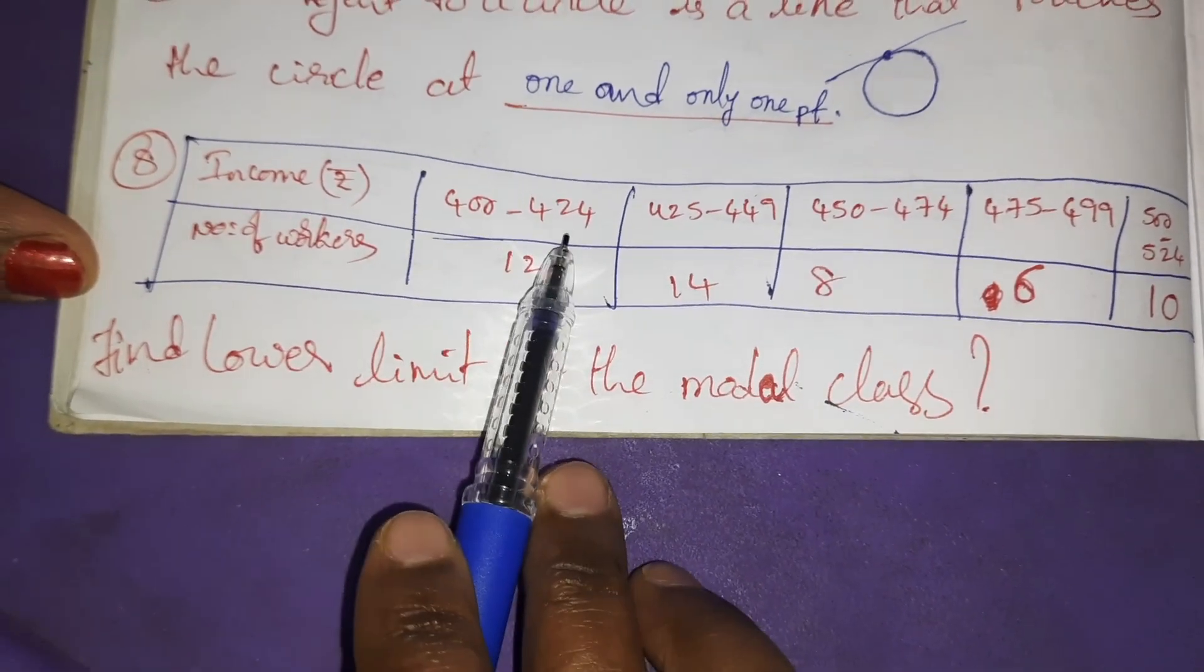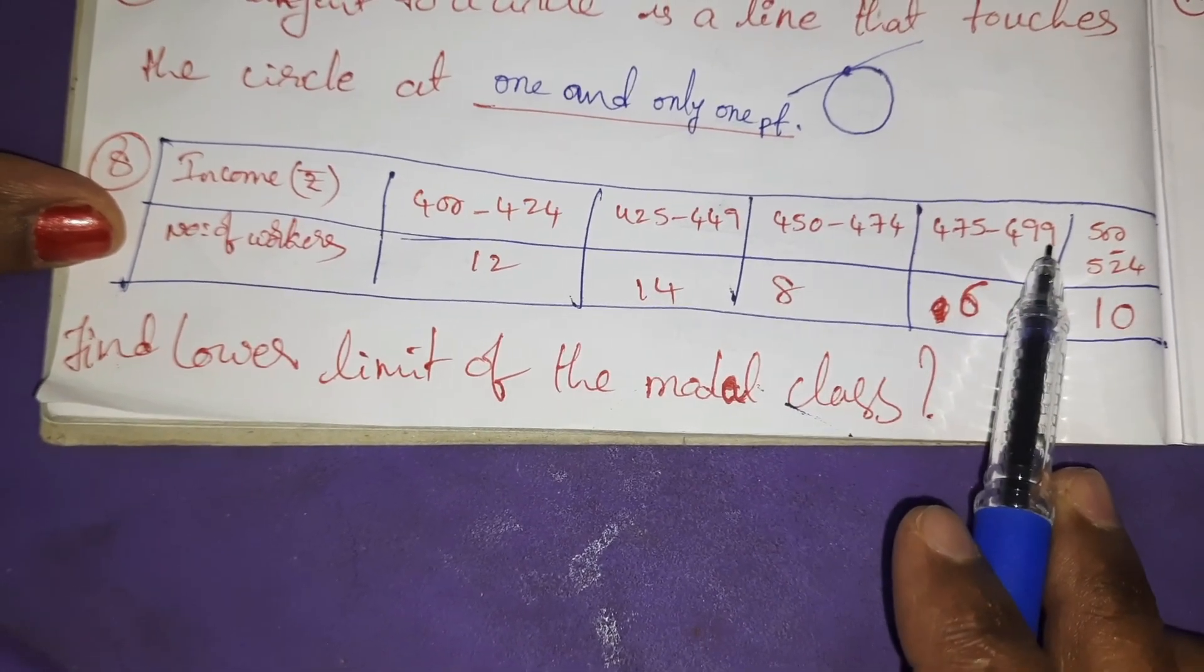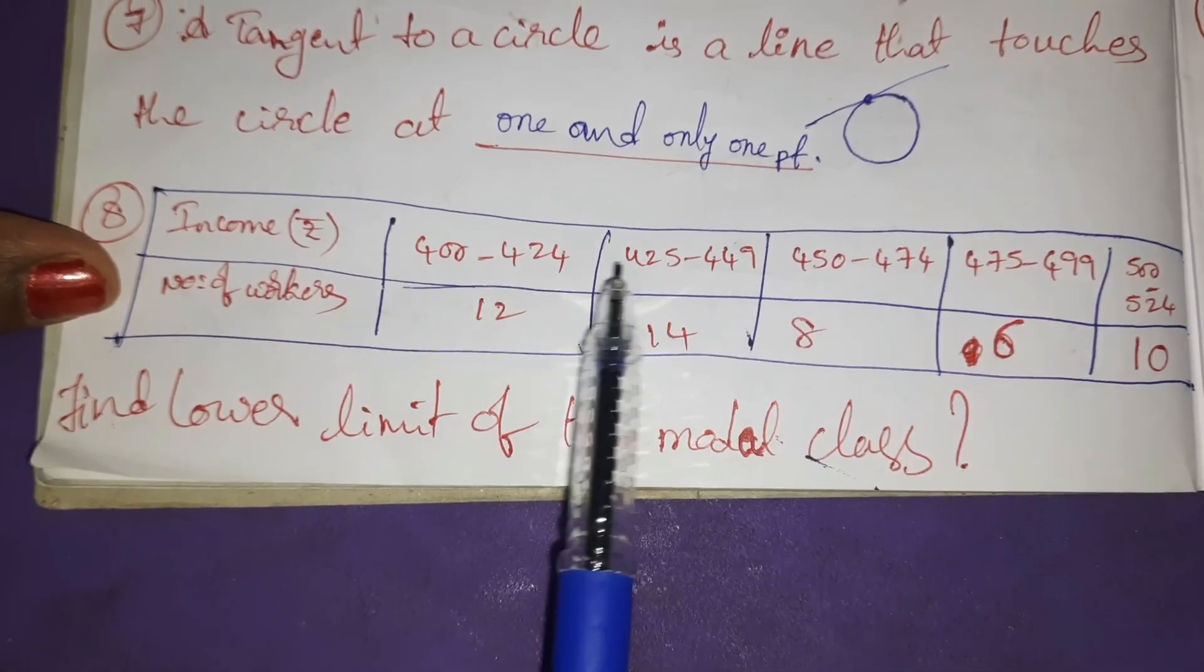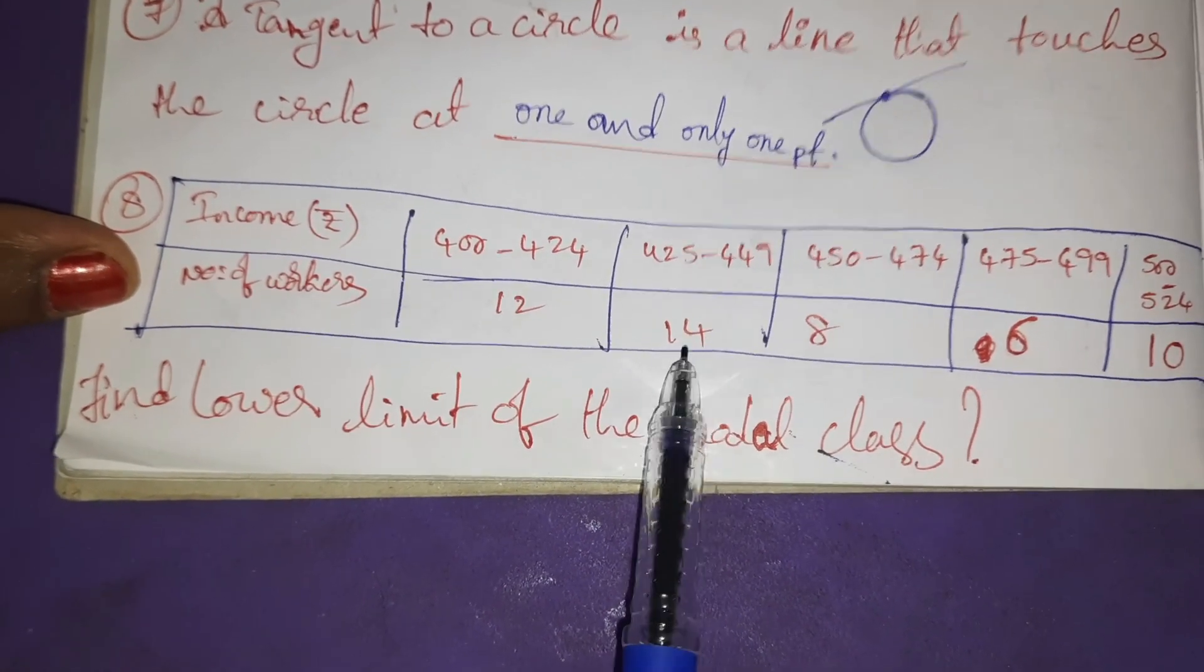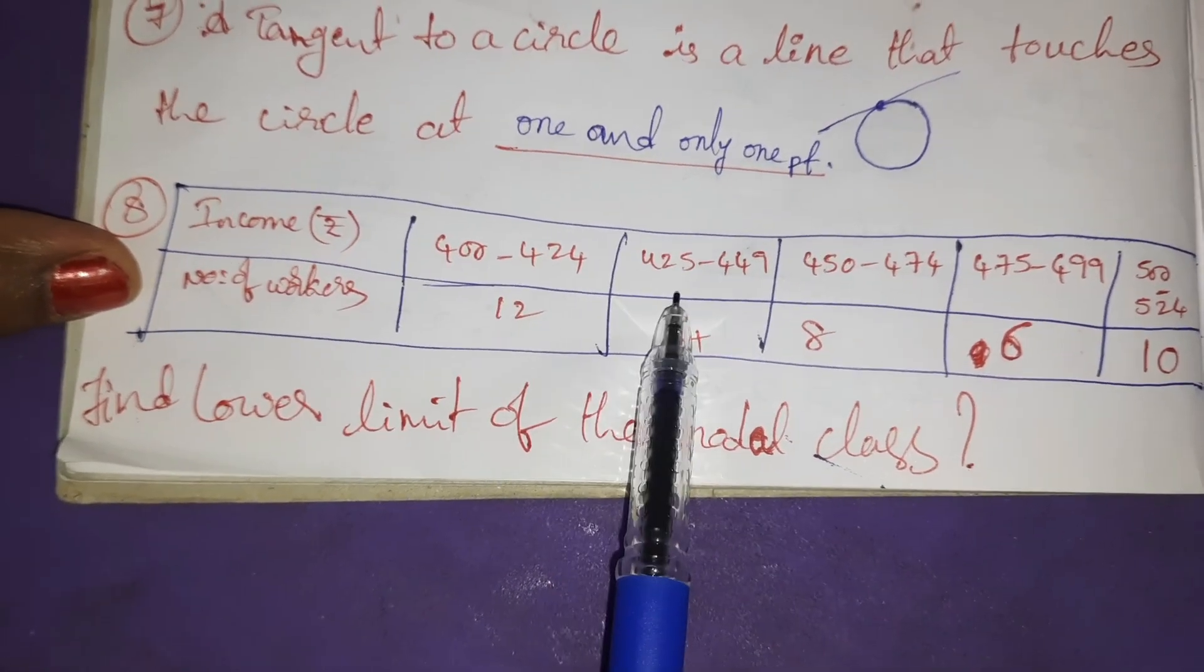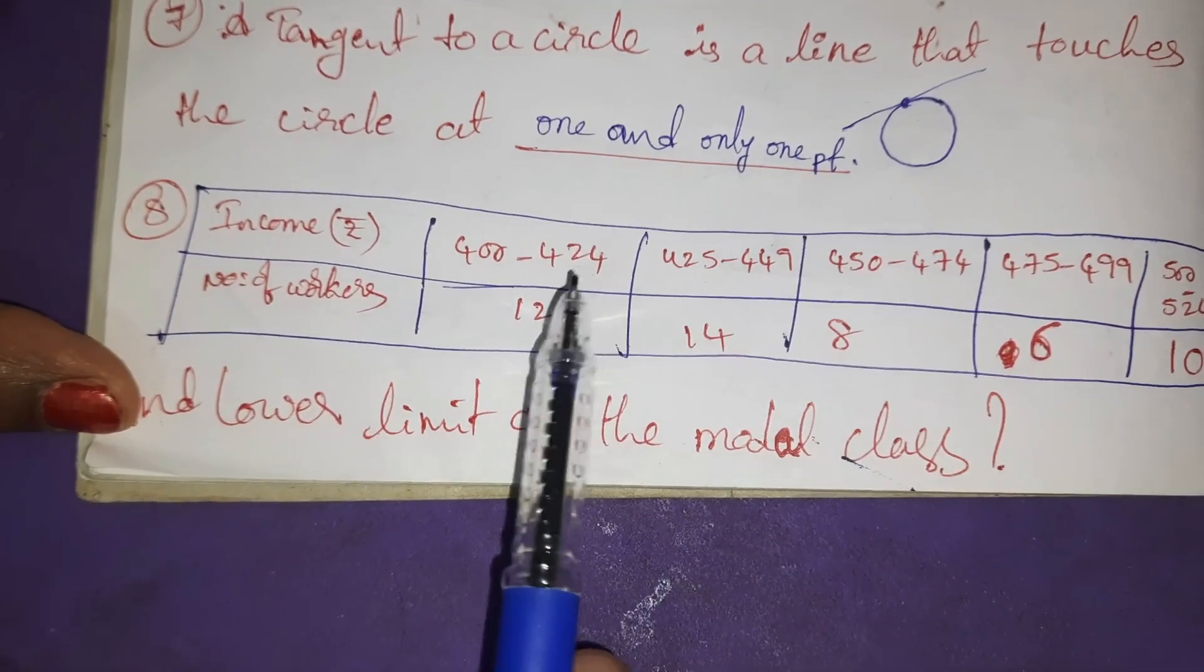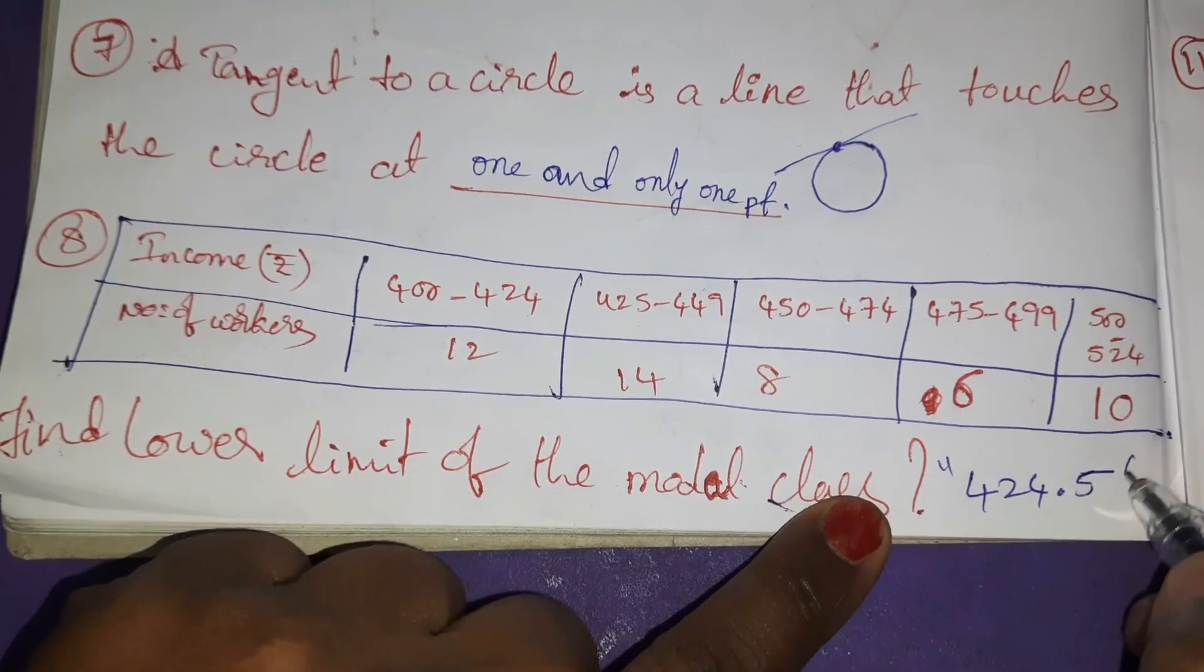Income: 400 to 424, 425 to 449, 450 to 474, 475 to 499, 500 to this one. Find the lower limit of the modal class. Modal class means the highest frequency is having the limits are modal class. Highest frequency is 14, class interval 425 to 449. So lower limit is 425, but it is not in continuous form. It is in discontinuous form. So 424, 425 middle number is 424.5 is lower limit of modal class.